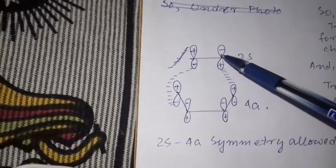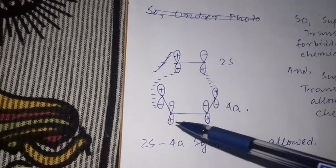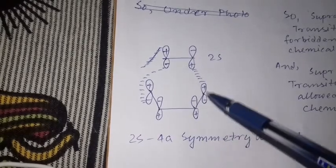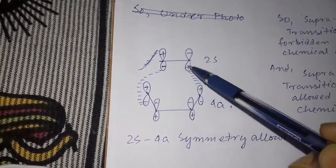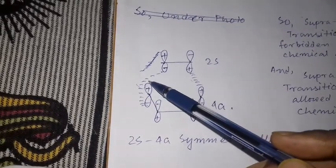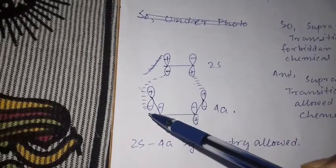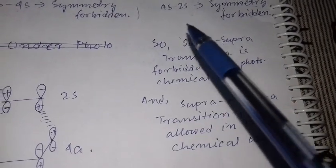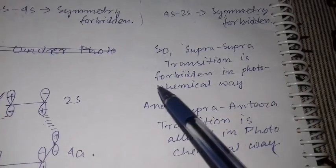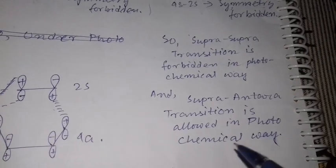However, considering the 4-suprafacial + 2-antarafacial (4S + 2A) transition: the negative lobe interacts with negative lobe, and positive lobe interacts with positive lobe — this is symmetry allowed. Since the butadiene system is a large molecule, this transition can geometrically occur. Therefore, the 2-suprafacial + 4-antarafacial transition is symmetry allowed. In summary, for 4+2 cycloaddition under photochemical conditions, the suprafacial pathway is forbidden, but the supra-antara transition is allowed.